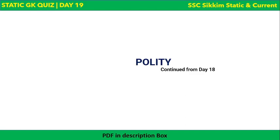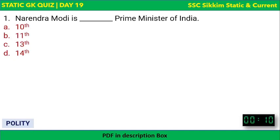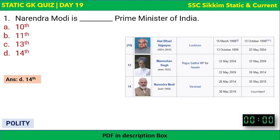The first question from Polity, continued from Day 18: Narendra Modi is which number Prime Minister of India? The options are 10th, 11th, 13th, or 14th. The correct answer is 14th. Manmohan Singh was the 13th Prime Minister, and Atal Bihari Vajpayee was the 10th Prime Minister before him.